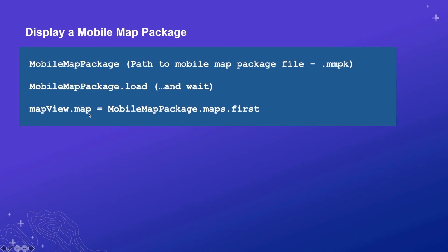This is often important if you have your own non-public system for getting around your facilities and you want to generate your own custom network data model. Once you have this mobile map package on the device, it's very simple to use. You create a mobile map package object in runtime, point it at the local file, load the package so runtime can inspect its contents, and get a map from it. Since it's a mobile map package it could have multiple maps, but you get a fully hydrated runtime map object which you can pass to the map view.